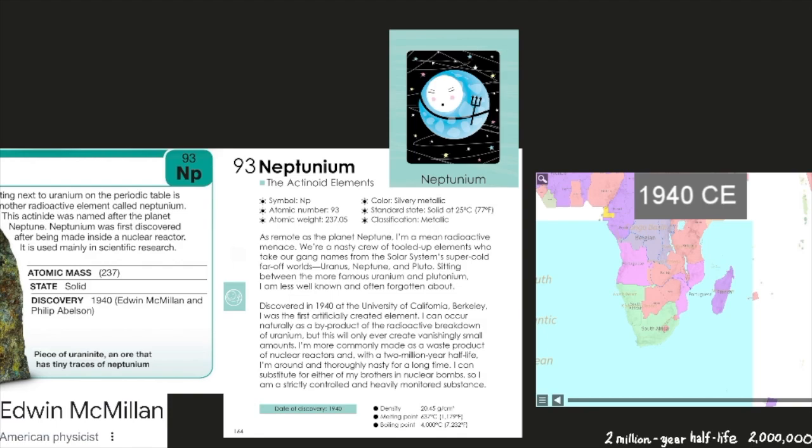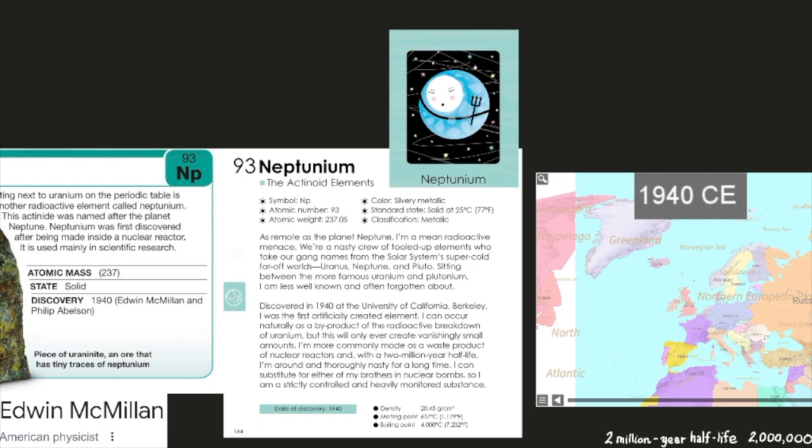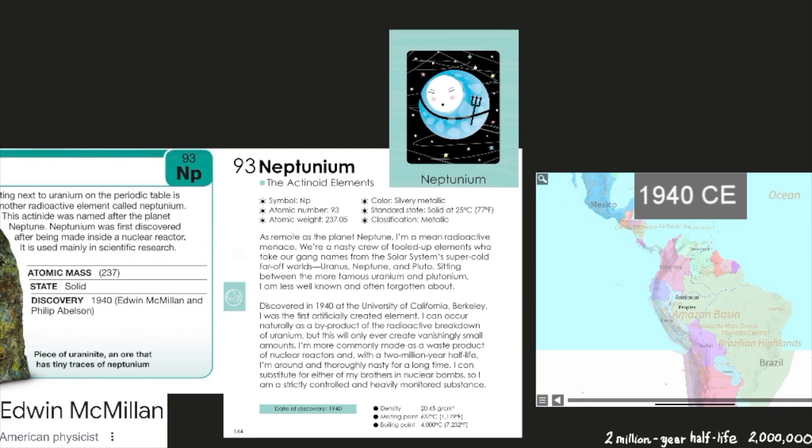Neptunium, element number 93, the actinoid elements, symbol Np, atomic number 93, atomic weight 237.05. Its color is silvery metallic. Its standard state is solid at 25 degrees Celsius or 77 degrees Fahrenheit. Its classification is metallic.